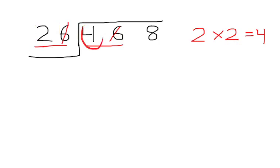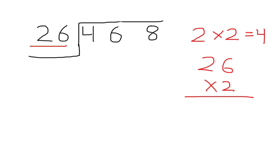Now let's take complete 26 and multiply it by 2. 2 times 6 is 12, put 2 here and 1 carries. 2 times 2 is 4, plus 1 is 5. It's 52, but 52 is greater than 46, so we have to go back.